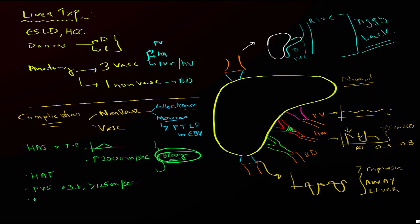You can also get portal vein thrombosis. Make sure you interrogate the portal vein with both color flow and spectral Doppler imaging, as very acute thrombus may be anechoic. You can also get hepatic vein stenosis and hepatic vein thrombosis. For thrombosis, you'll see a defect within the hepatic veins as they connect to the IVC, while with stenosis you'll see narrowing with a velocity differential. There are no well-established criteria, but a large discrepancy is something to think about.